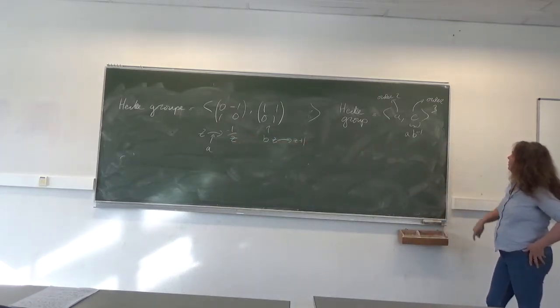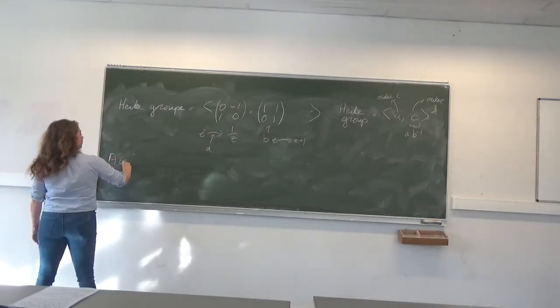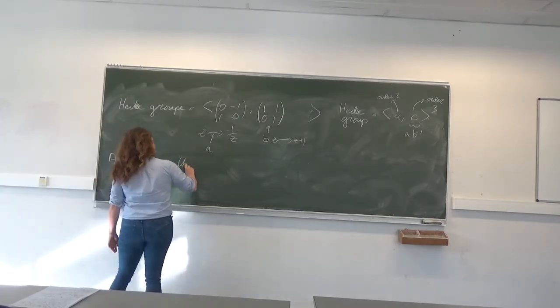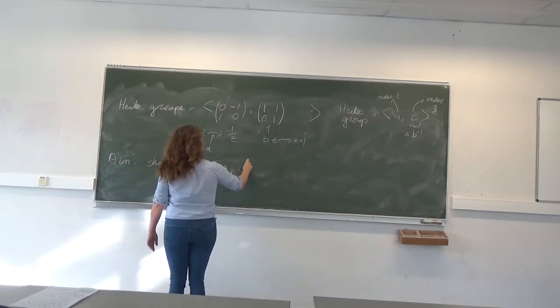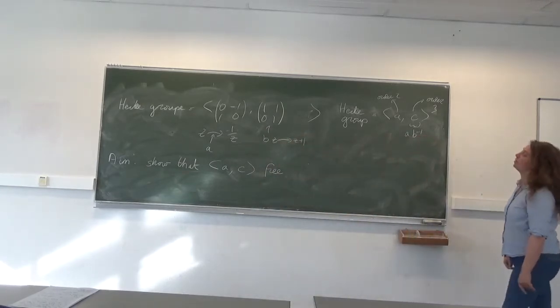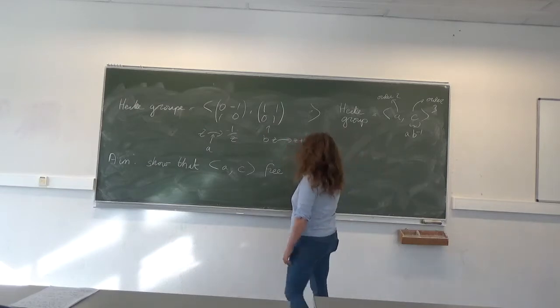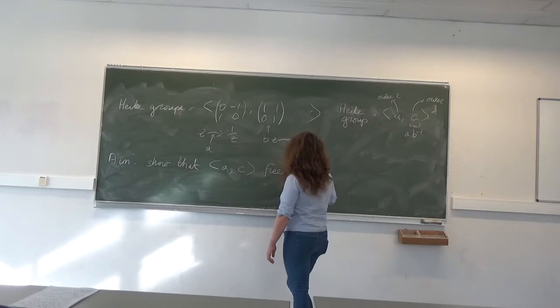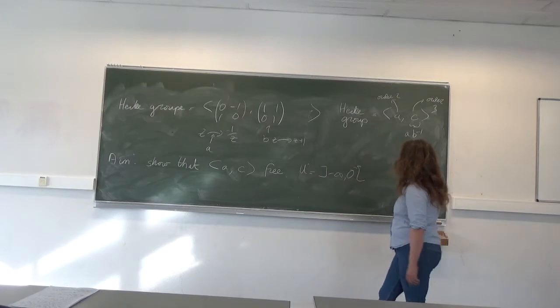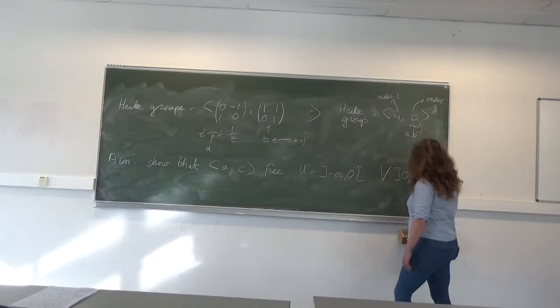Now I have these two elements, and the aim is to show that this group is generated by a and c. To do this, I'm going to look at the dynamics. I'll let u be the negative real line, (-∞, 0), and v be the positive real line, (0, ∞).